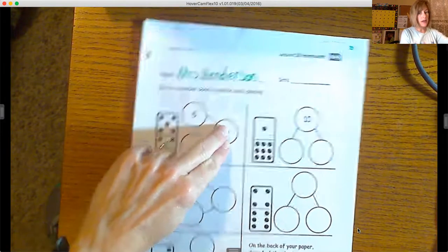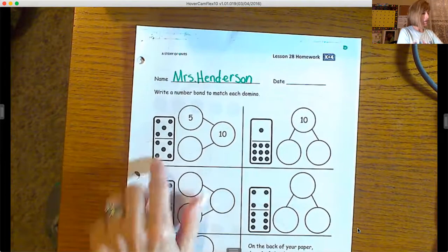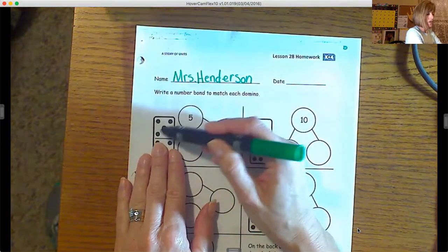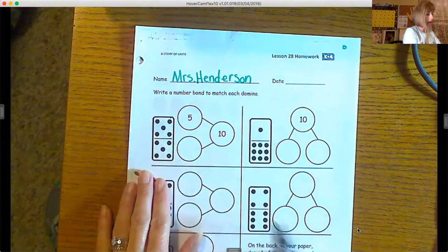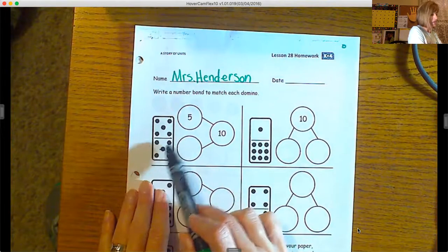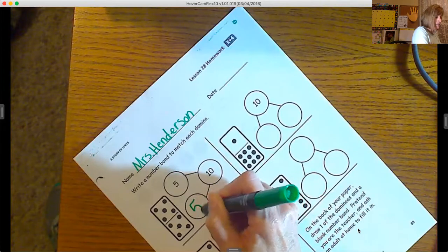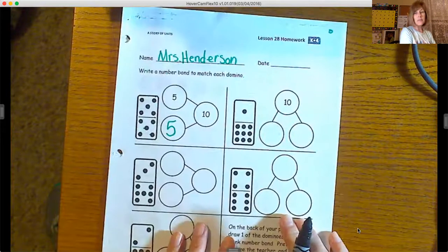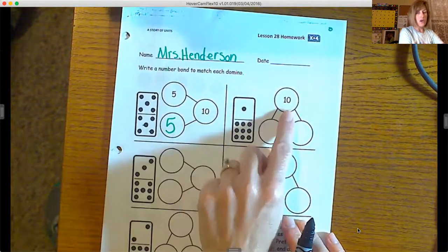So we have in this domino we have one, two, three, four, five, and they have the five there. And the bottom one we have one, two, three, four, five, so we will write five in this bottom one. Pretty easy.